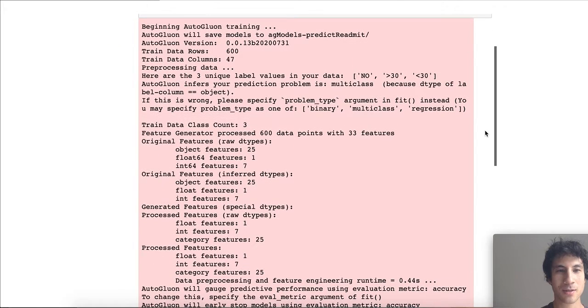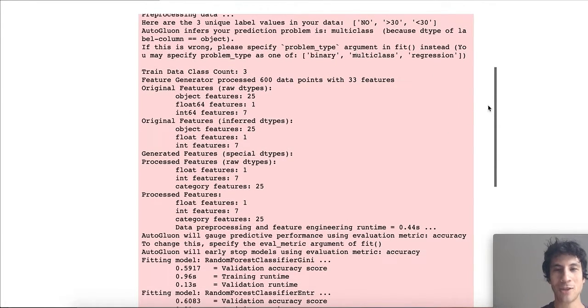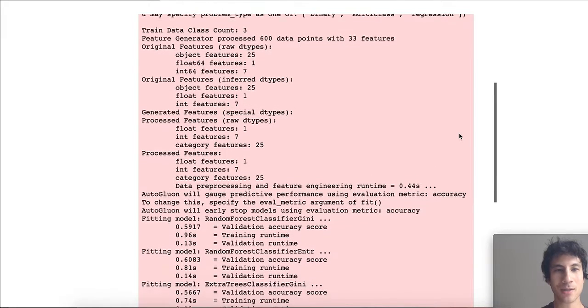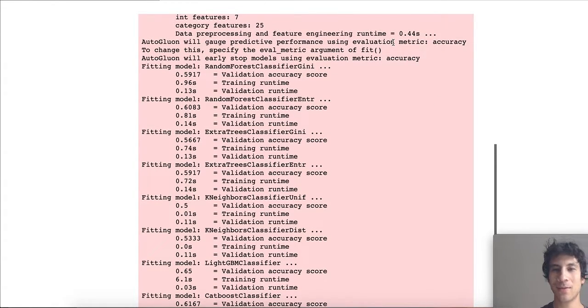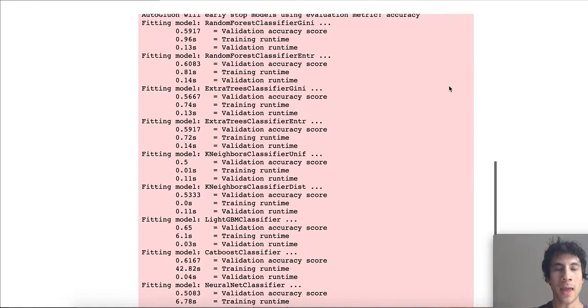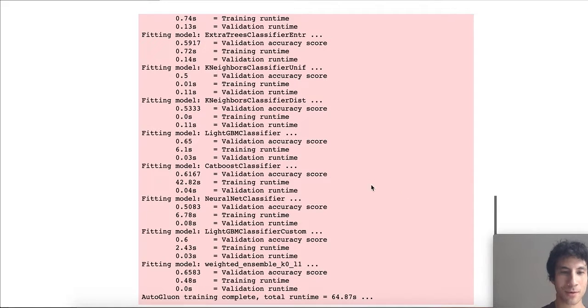Here we can see that it's starting training. It found there's three unique label values in the target column. It infers the prediction problem is a multi-class classification problem because there's these three unique values only. It tells you you can optionally change this via certain arguments. It preprocesses the data, and then it decides that the evaluation metric of interest should be accuracy because you didn't specify anything, and then it'll start fitting models. So it'll fit some random forest models, some k-nearest neighbors, some neural network, etc., and then it completes training here.